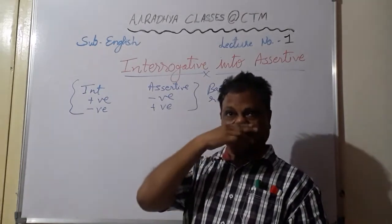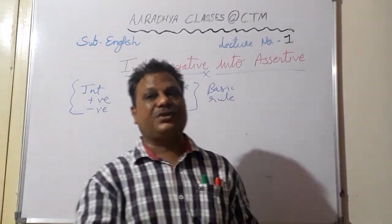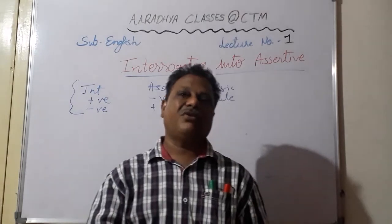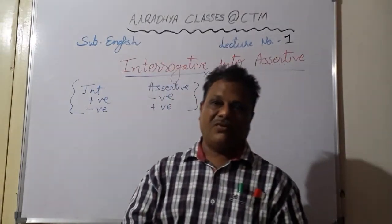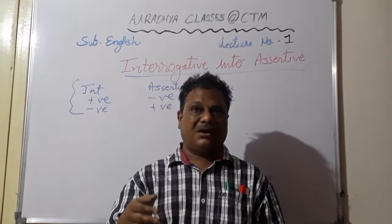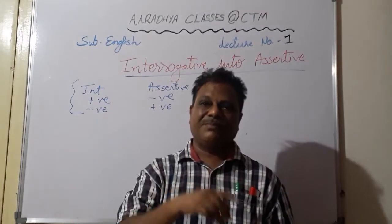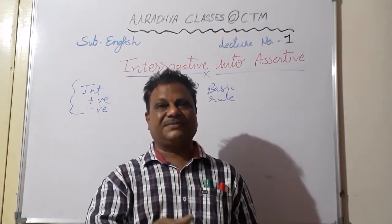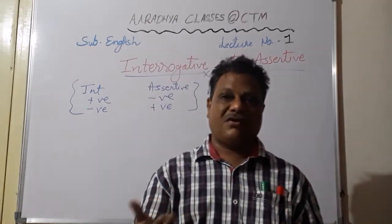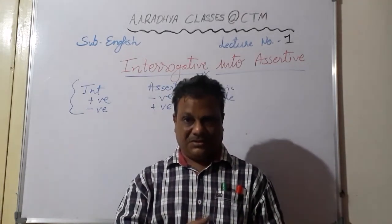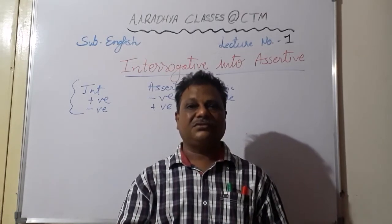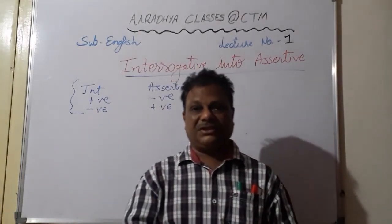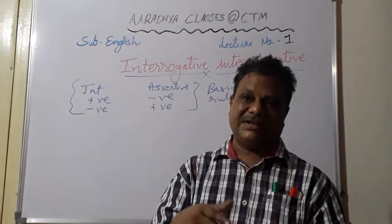Coming to interrogative sentences, there are two types: yes/no questions and wh-questions. In both we have positive as well as negative questions. For example, 'Are you his lawyer?' and 'Wasn't he present in the meeting?' — that is a negative yes/no question. Wh-questions begin with who, what, when, where, why, how. They can also be positive or negative. For example, 'When do you begin your work?' and 'Why don't you come with us?'